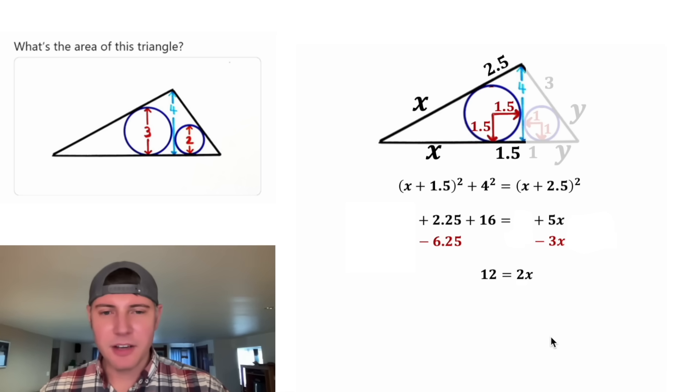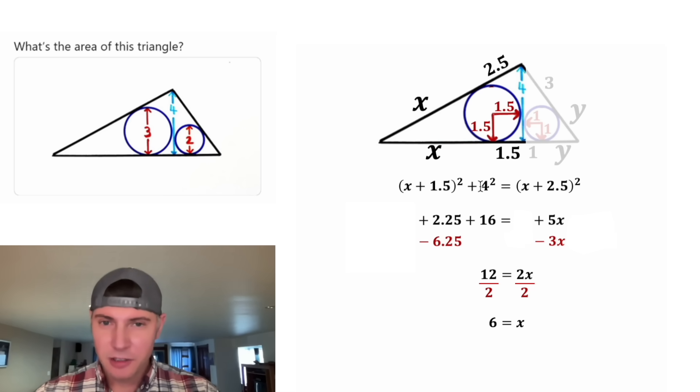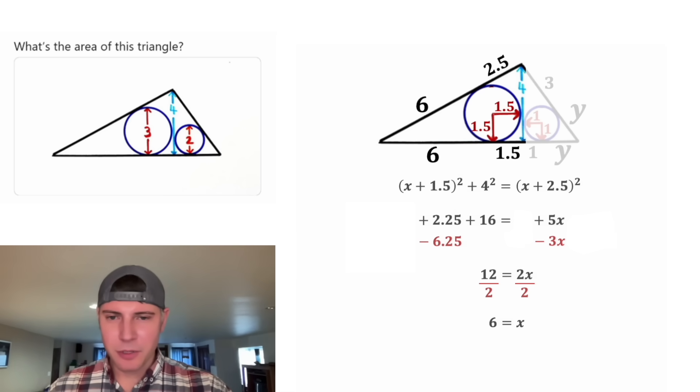Now to get the x all by itself, we can divide both sides by 2. 12 divided by 2 is 6. And 2x divided by 2 is x. And now we know that x is equal to 6. Let's change both of these x's to 6. And now we're done with this work.